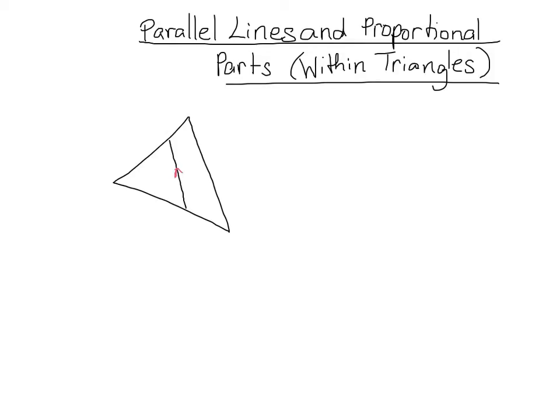As you can see, that line that we just drew is parallel to that line. Let's label our triangle so we can talk about it. We have A, B, C, D, and E. According to the triangle proportionality theorem, this parallel line will chop these two segments up in a way that is proportional.